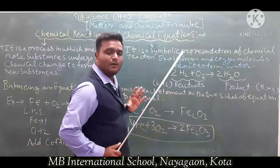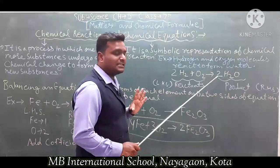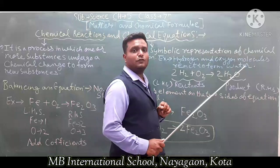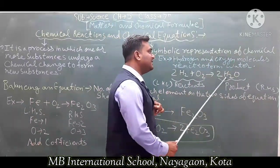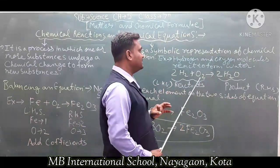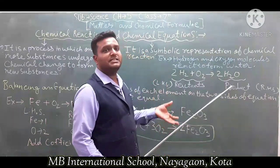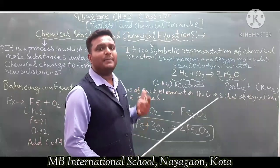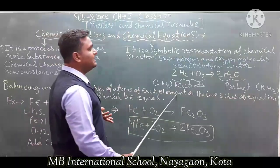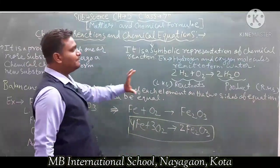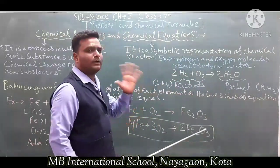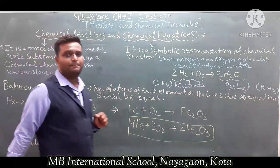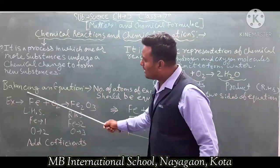For example, hydrogen and oxygen molecules form water — this is the symbolic representation. Now here is an unbalanced equation: Fe + O2 → Fe2O3. In this unbalanced equation, Fe + O2 is the LHS (left hand side) and Fe2O3 is the RHS (right hand side).